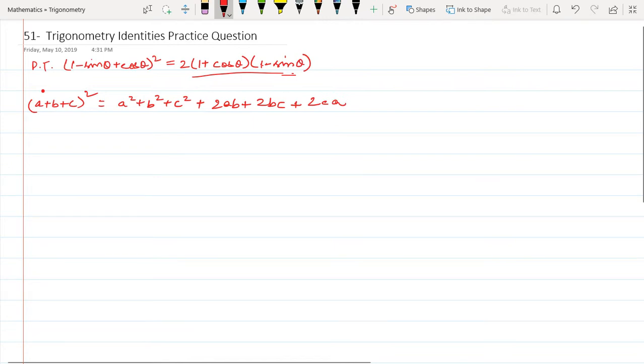Now you have to remember that in this part your a is equal to 1, your b is equal to minus sin theta and your c is equal to cos theta.